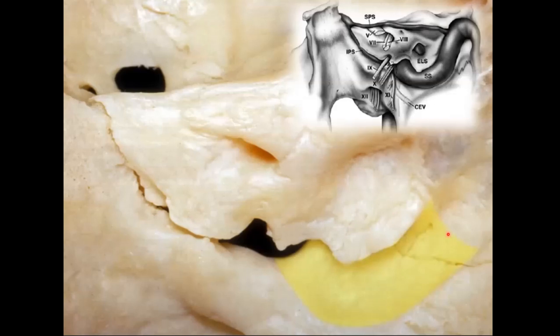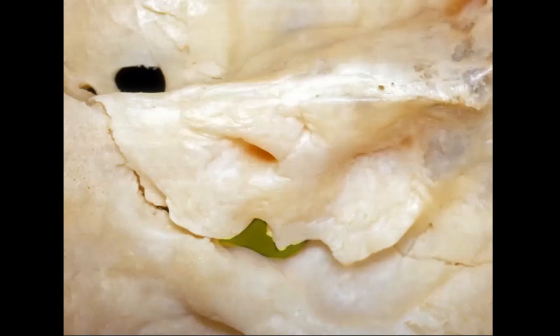Down here is a groove where we would expect to find the sigmoid sinus, just like we see here. The sigmoid sinus, as it comes down, curves and enters the jugular foramen, joining with the inferior petrosal sinus to form the jugular bowl. Here's the jugular foramen, which we'll be seeing in a lot more detail shortly.